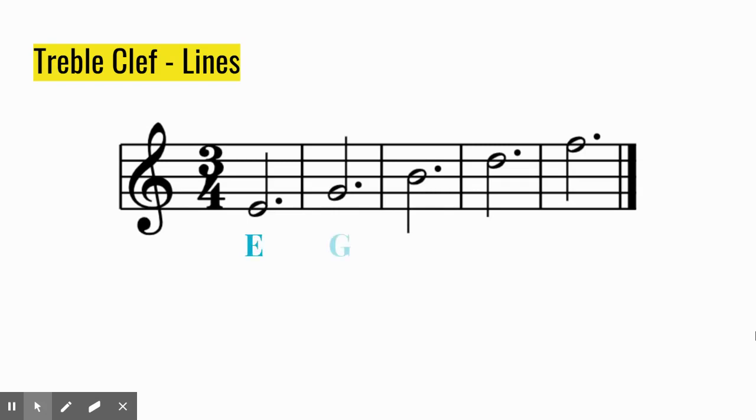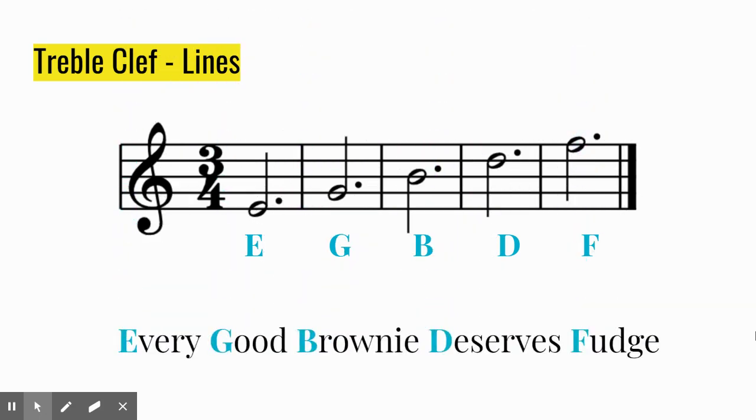Notes on the lines read E, G, B, D, F. This doesn't really spell a word that we can use, but we can make a phrase using words that start with those letters. Since I like food, the phrase that I like to use is, every good brownie deserves fudge.